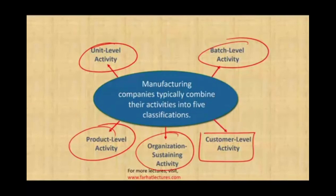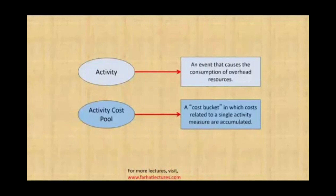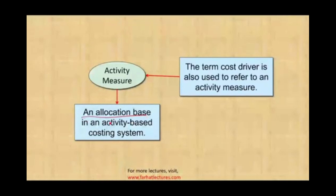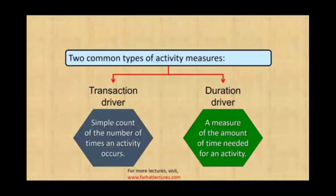Customer level means how much does it cost us to serve a customer — for example, how much does it cost to handle a complaint or service a customer over the phone. An activity is an event that causes the consumption of overhead resources, such as unloading trucks. An activity cost pool is the cost bucket in which costs related to a single activity measure are accumulated. The activity measure — also called cost driver — is what drives our cost. There are two common types: transaction driven, a simple count of the number of activities, and time driven, measuring how much time is spent.